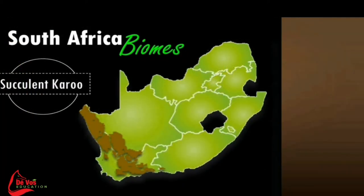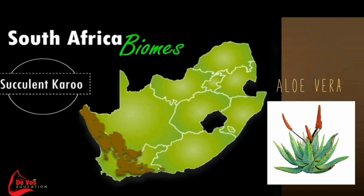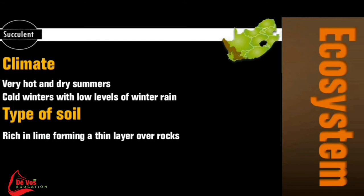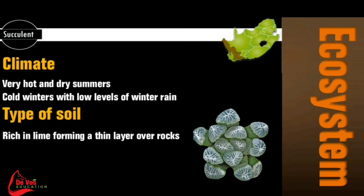The succulent Karoo extends over the arid western part of South Africa, including Namaqualand and the Richtersveld, leading up the west coast. It is a winter rainfall area with very hot and dry summers. The soil is sandy with little to no nutritional value, even though it is rich in lime, forming a thin layer over the rocks. The plants are adapted to extremely dry summer conditions and include succulent plants with thick, fleshy leaves to store water, and others with small leaves and thorns to reduce water loss through transpiration. Annual plants survive the dry period by germinating, growing, flowering and setting seeds during the moist winter and spring, and evade the dry periods by being stored as seeds.